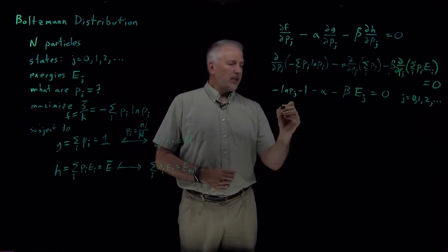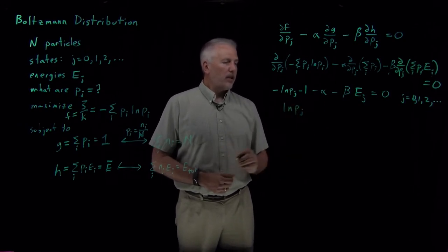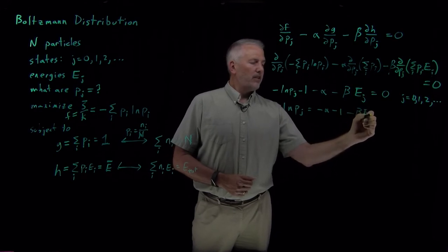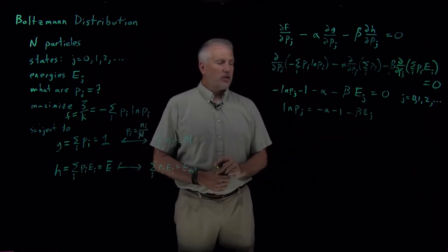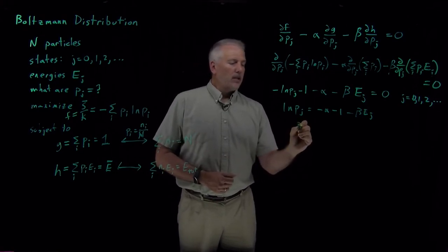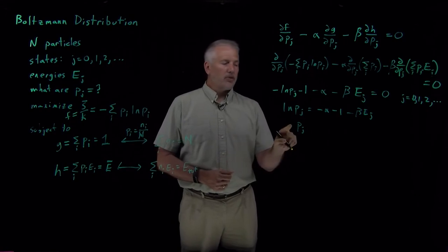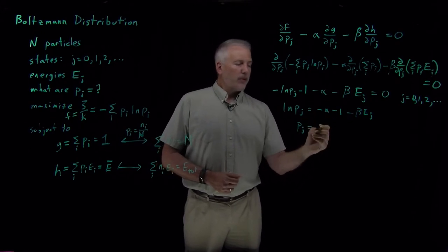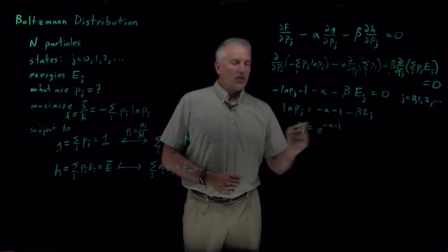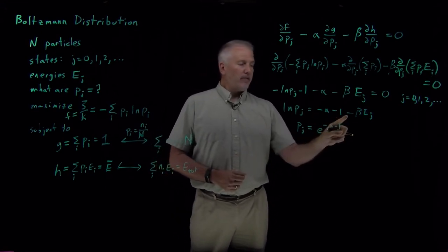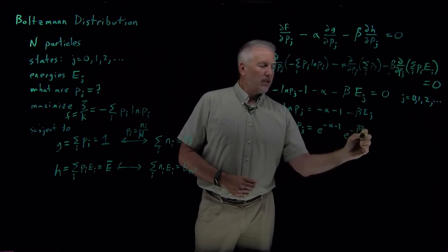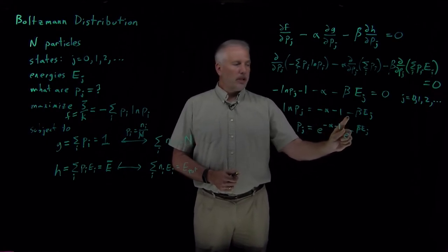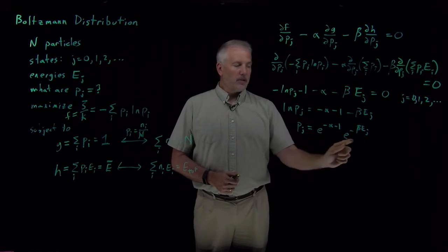Rearranging to put log p_j on the left, the right side is minus alpha minus 1 minus beta E_j. Undoing the log by exponentiating both sides, e to the log p_j gives p_j. I break this into two terms: e to the minus alpha minus 1, and e to the minus beta E_j. That's because e to a sum equals the product of the exponentials. So the probability of occupying state j is some constant involving alpha times e to the minus beta E_j.